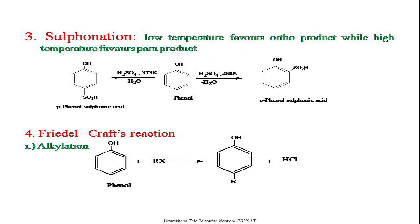The next reaction of phenol is sulfonation, which also occurs on the ring. At low temperature, ortho products are favored, while at high temperature para products are favored. When phenol is reacted with sulfuric acid at 288 K, water is eliminated and we obtain ortho-phenolsulfonic acid. If the same reaction is carried out at high temperature (about 373 K), we obtain para-phenolsulfonic acid. So temperature determines which product — ortho or para — will be obtained.